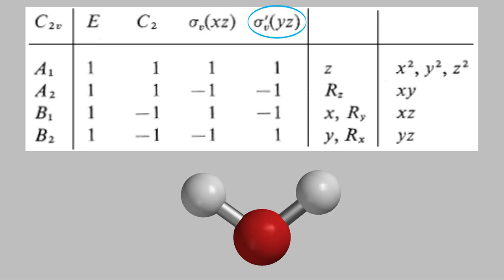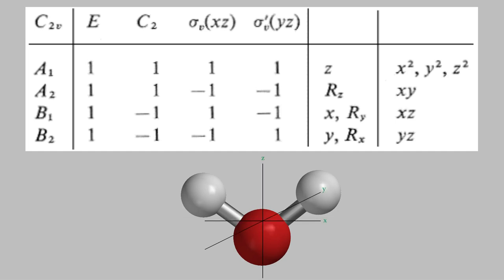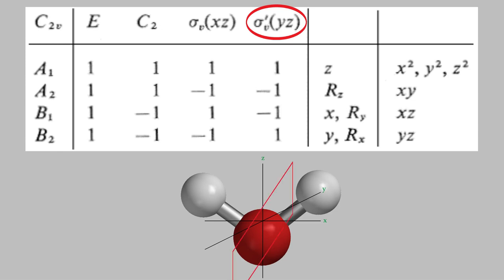Which plane is which? The conventional way of describing the three axes is that the Z axis is the one that corresponds to the major axis of the molecule. So in the case of water, the Z axis is this one. Meanwhile, if the molecule is flat, the X axis is in the plane of the molecule. So in water, the X axis is here, which means that the Y axis is the last remaining one. So the XZ vertical mirror plane is the one that contains the molecule, and the YZ plane is the one that bisects the bond angle.